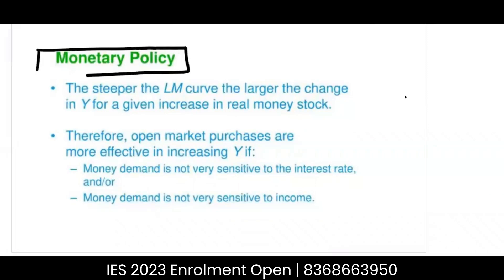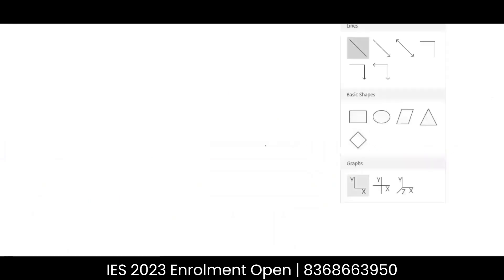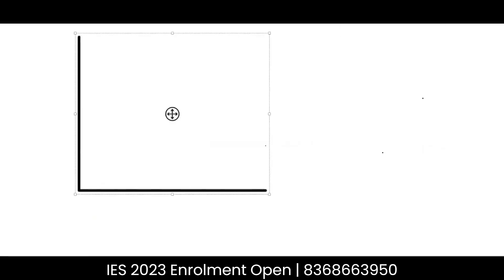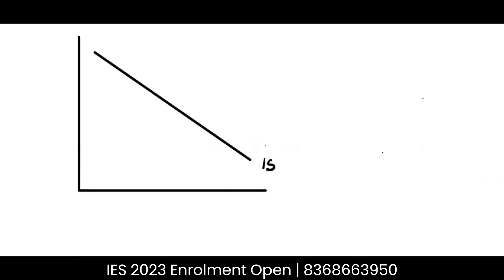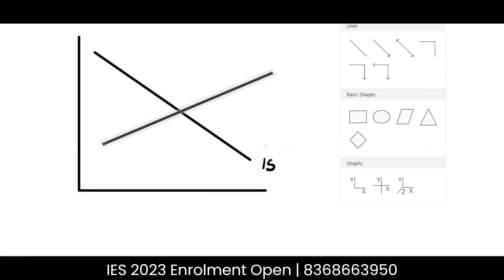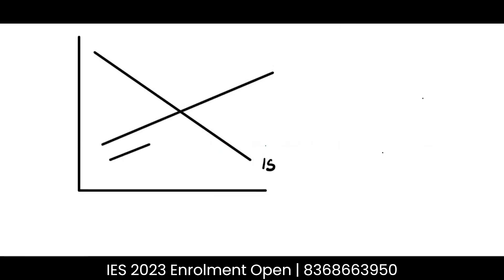I'm going to continue with monetary policy and the transmission mechanism, but now I'm going to see what happens with the slope of the LM curve. Let's consider an equilibrium market where the IS and the LM curve are meeting. I'm going to use a common IS curve, and in one case I'm going to draw a flat LM curve, and then due to monetary policy the LM curve is shifting to the right.